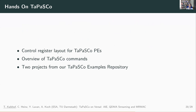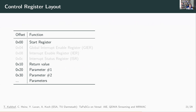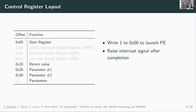The remaining part of my talk provides some hands-on instructions. I'll start with the control register layout for Tapasco PEs, give a short overview of the Tapasco commands, then present two projects from our examples repository. The control register layout is quite simple: the most important register is the start register at address zero — writing a one launches the PE, and when the PE finishes it raises an interrupt signal. At offset 0x10, you have your return register for one return value, followed by the different arguments you want to pass to your PE, supporting up to 64-bit values.